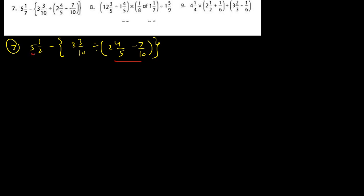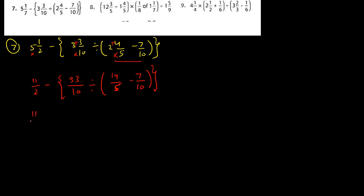So: five sevens are thirty-five, thirty-five plus one is thirty-six — wait, re-reading: five twos are ten, ten plus one is eleven, so eleven upon two. Then curly bracket: ten threes are thirty, thirty plus three is thirty-three, so thirty-three upon 10. Divided by: five twos are ten, ten plus four is fourteen, so fourteen upon 5, minus 7 upon 10. Small bracket close, curly bracket close.